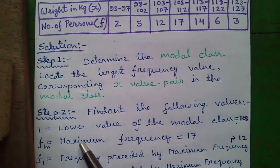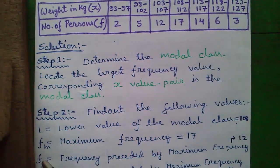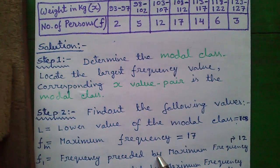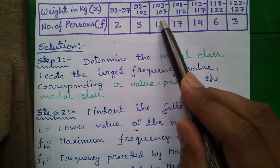Fm is the maximum frequency value. The maximum frequency value is 17. F1 is the frequency preceding the maximum frequency. So the frequency preceding is 12.